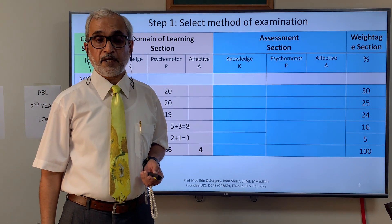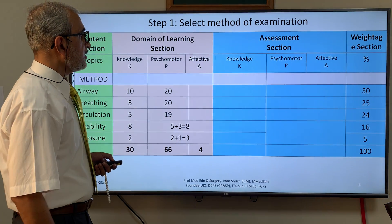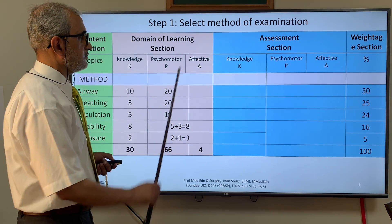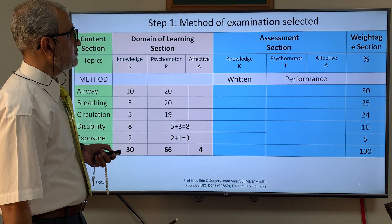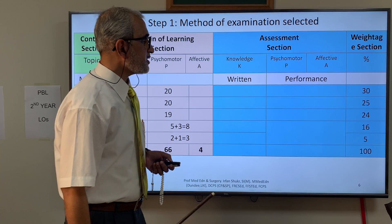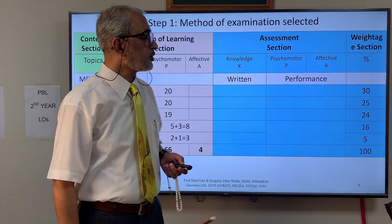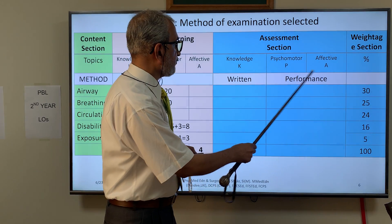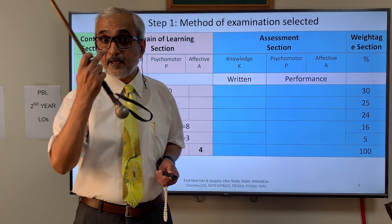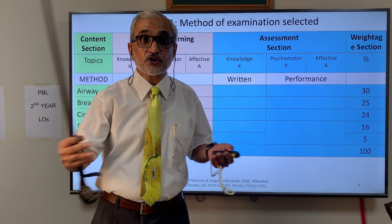The first step is to select the method of examination. For the course on primary survey: for knowledge, we select the written method; and for psychomotor and affective domains, we select the performance method — because we believe psychomotor and affective competencies cannot be assessed by written method, and that is true, because a skill has to be shown.